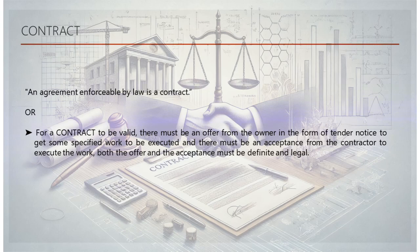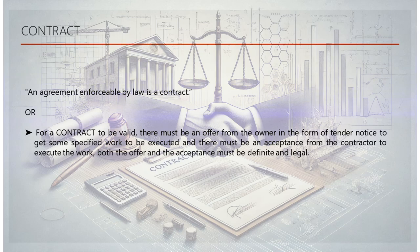For a contract to be valid, it must meet certain criteria. Firstly, there needs to be an offer from one party — often the owner or client who proposes a specific piece of work to be executed. This offer is typically made through a tender notice or similar formal process. Secondly, there must be an acceptance of that offer by another party, usually the contractor, who agrees to carry out the work under the specified terms. Importantly, both the offer and the acceptance must be clear, definite, and legal. Without these elements, the contract may not hold up in a court of law.